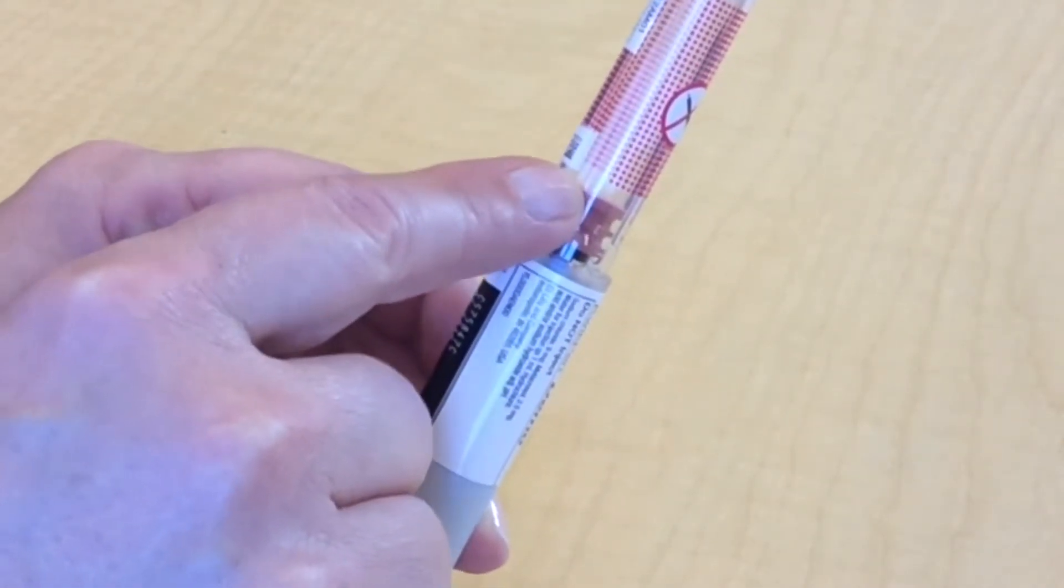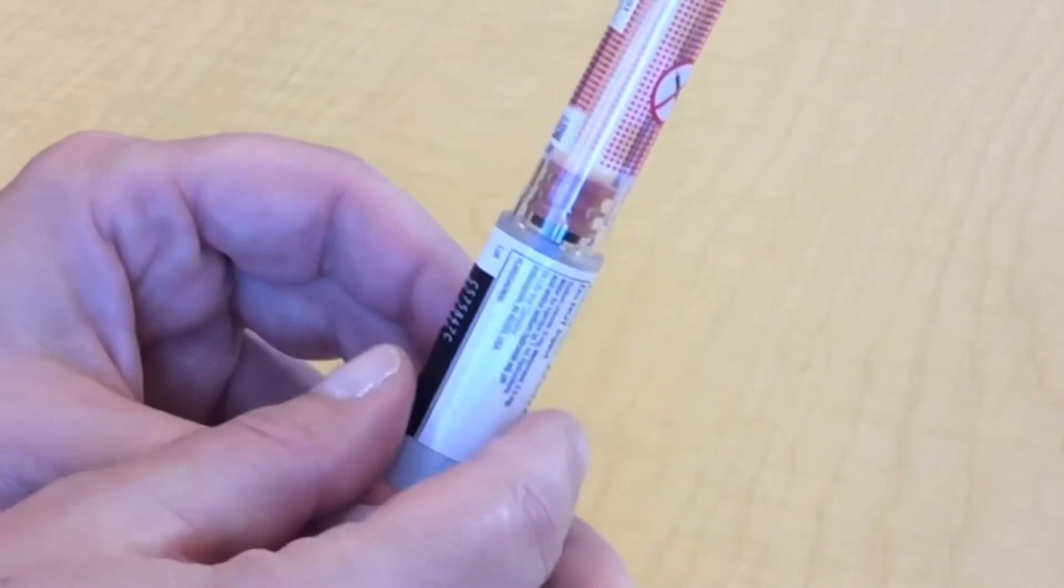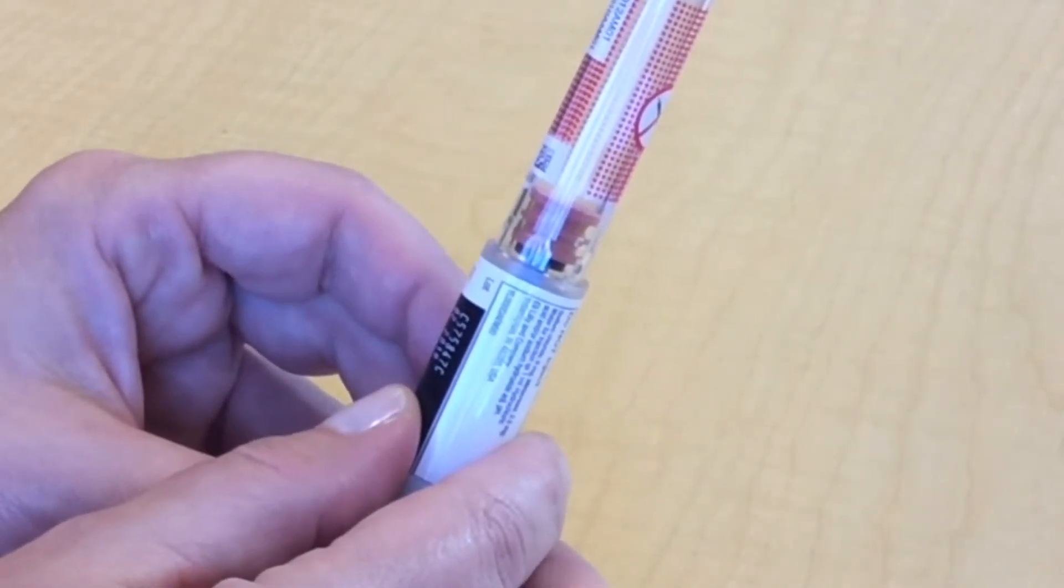If the insulin has changed color or if you see anything floating, it's not safe to use. Throw it out and get a new insulin pen.